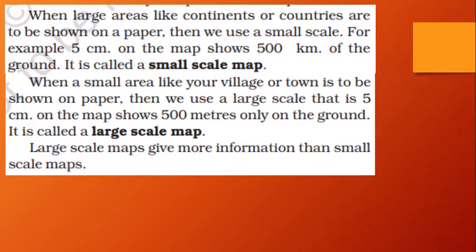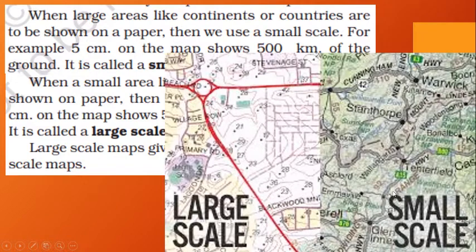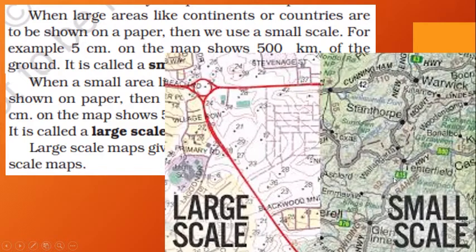Large scale maps give more information because the area is represented more clearly — you can even see individual streets. Comparing the two types of maps of the same place, the small scale map looks very compressed and messy, while the large scale map is clear and detailed. This is the key difference between large scale and small scale maps.